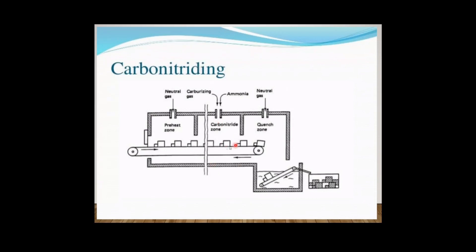This is the free body diagram of carbonitriding. It consists of three zones: a preheating zone, a carbonitriding zone, and a quenching zone. By means of a belt conveyor the component to be case hardened enters the furnace. First it is preheated by means of neutral gas, then it is heated by means of carburizing gas and ammonia gas - that is carbon monoxide and ammonia. In the second zone carbon and nitrogen are formed around the surface of the material. Then the material enters the quenching zone where cooling gas cools the component, after which it is case hardened and taken out of the furnace.